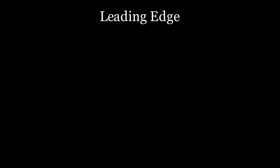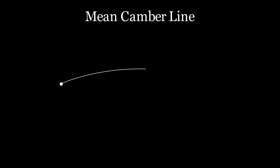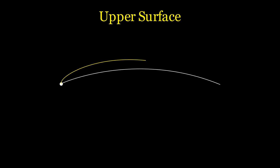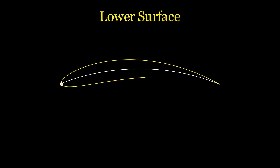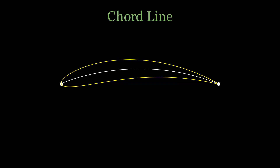First we'll examine the anatomy of the airfoil. Starting forward to aft we immediately have the leading edge. Going in the middle we have the mean camber line, and going up we have the upper surface of the airfoil. Going down we have the lower surface, and all the way at the end we have the trailing edge. There's one more line that we inscribe, and that is the flat line connecting the leading and trailing edge. This line is known as the chord line, the chord being the length of the wing from forward to aft.